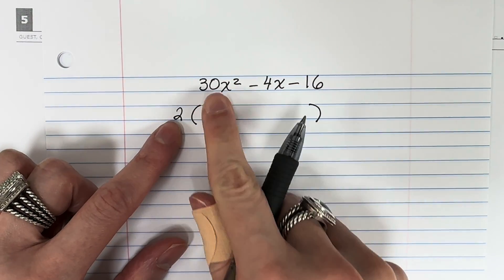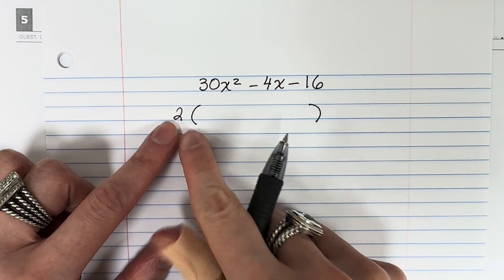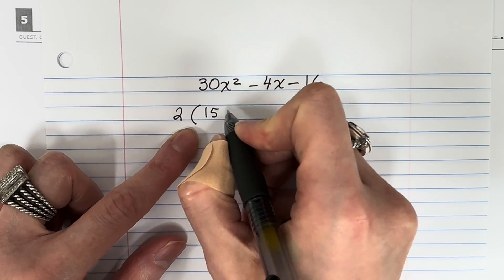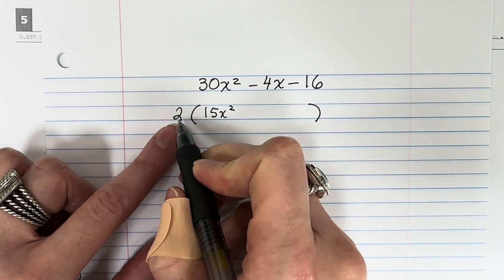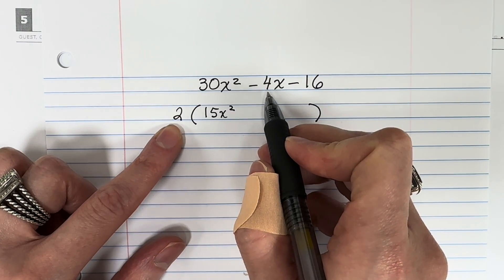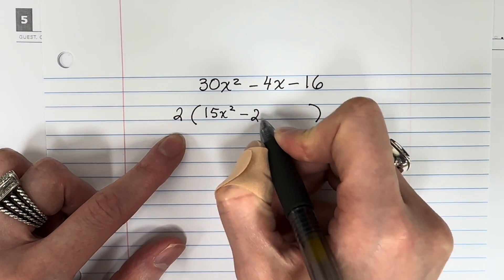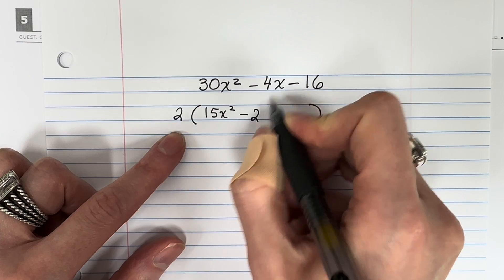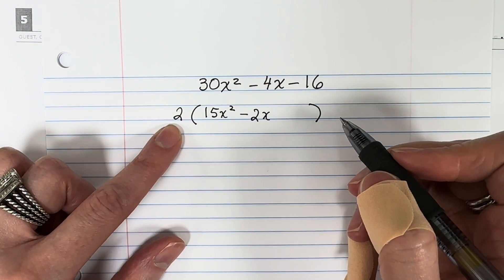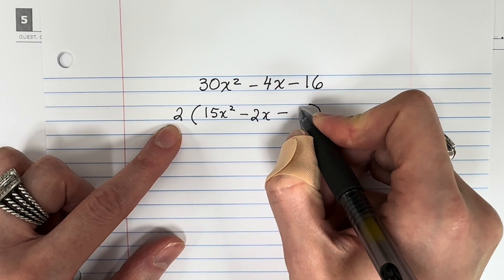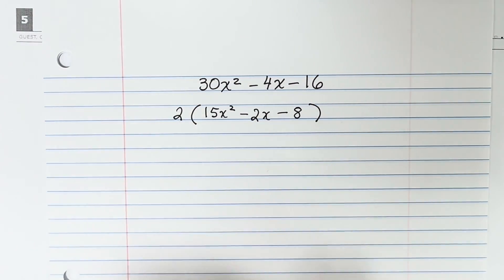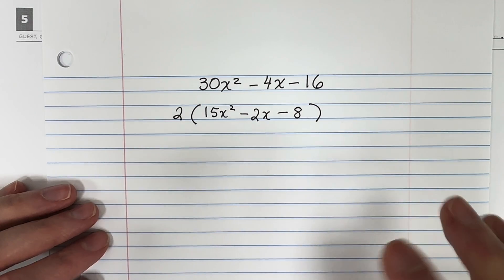2 times what number is 30? 2 times 15 is 30. Copy the x squared. 2 times what number is negative 4? 2 times negative 2 is negative 4. Copy the x. 2 times what number is negative 16? 2 times negative 8 is negative 16. We already factored a little bit there.